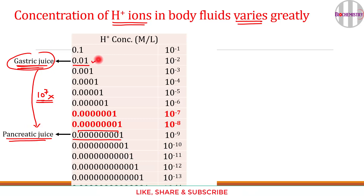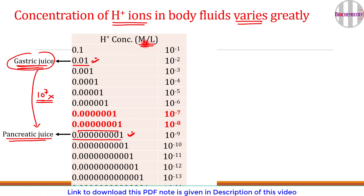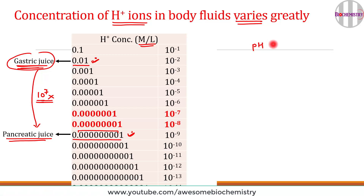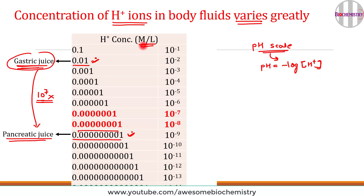Representing hydrogen ion concentration in moles per liter is very inconvenient because these small numbers are difficult to remember and interpret clinically. Therefore, in clinical practice we use the pH scale. pH is defined as the negative logarithm of hydrogen ion concentration, where the molecule in square brackets denotes concentration in moles per liter.